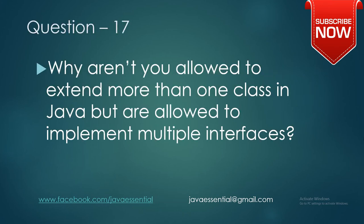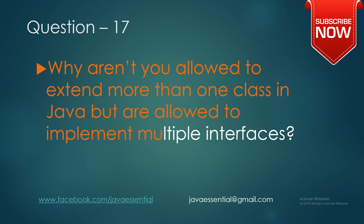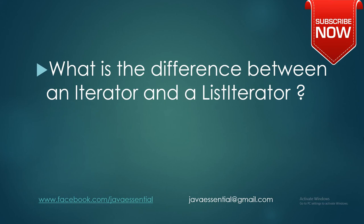Question number seventeen is: why are you not allowed to extend more than one class in Java, but you are allowed to implement multiple interfaces? It's all about the definition — an interface doesn't contain the definition. You should have a basic idea about it.